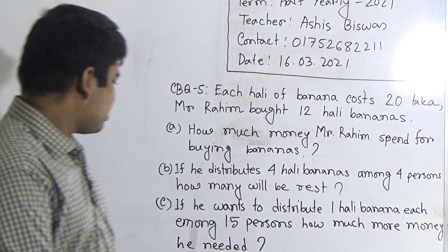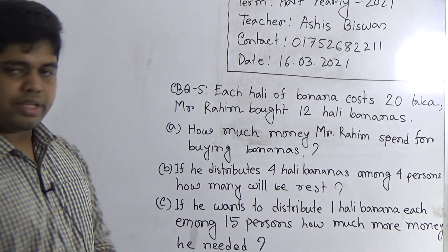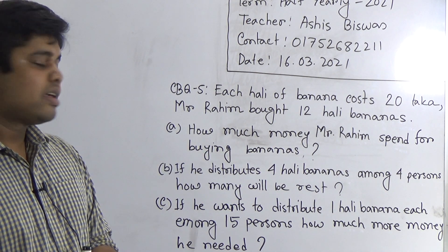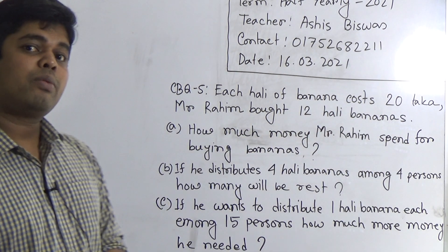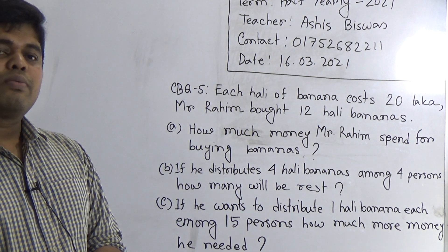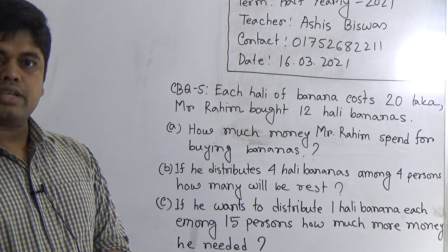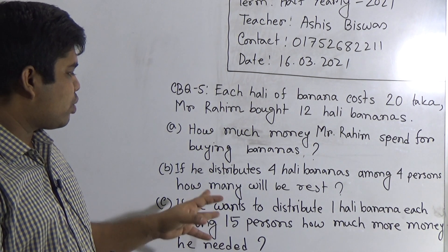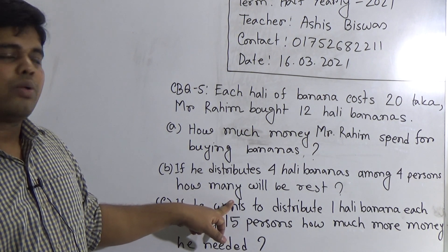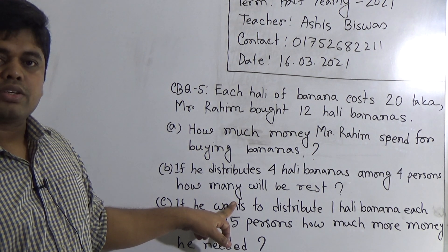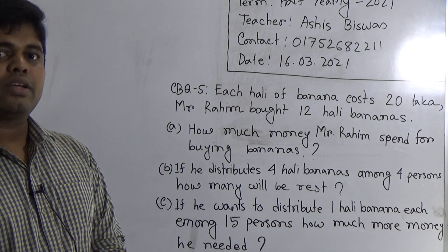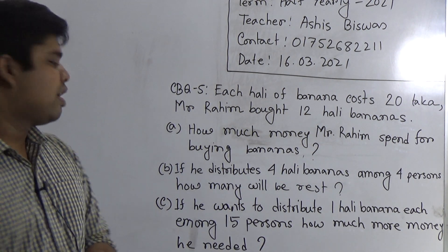Question B: If he distributes 4 hali bananas among 4 persons, how many will be raised? Mr. Rohim has 12 hali bananas. From the 12 hali he distributes 4 hali bananas, so the rest is 12 minus 4, which is 8 hali. But the question asks how many bananas, so we convert hali into things. We know 1 hali equals 4 bananas, so 8 hali equals 8 multiplied by 4, which is 32 bananas.